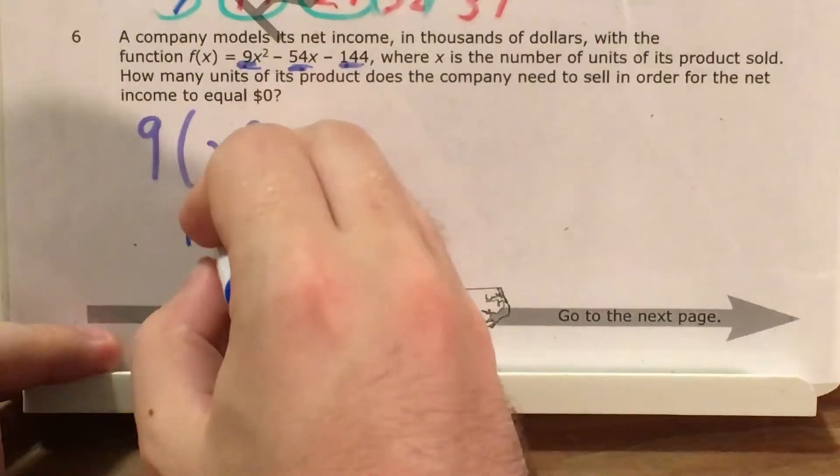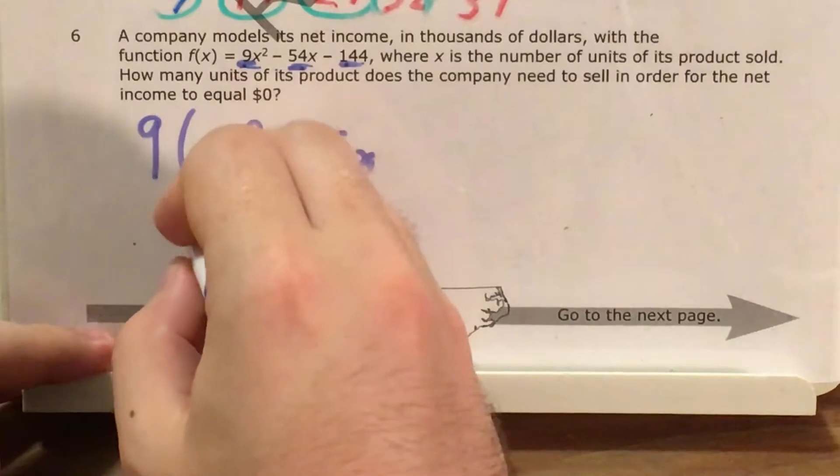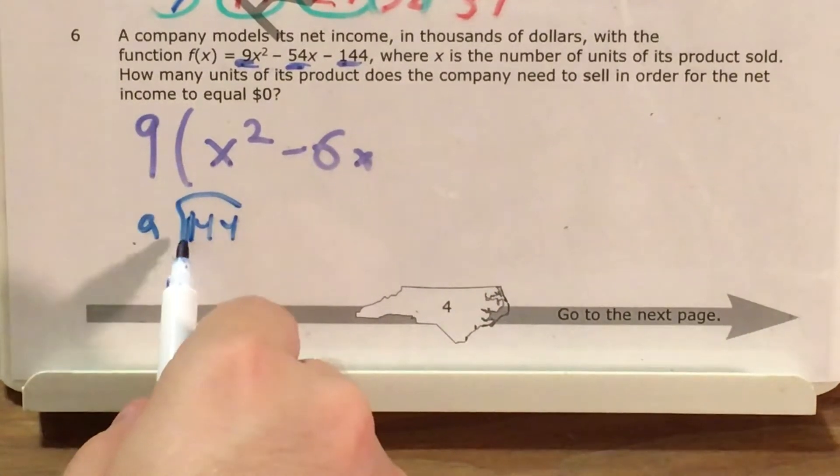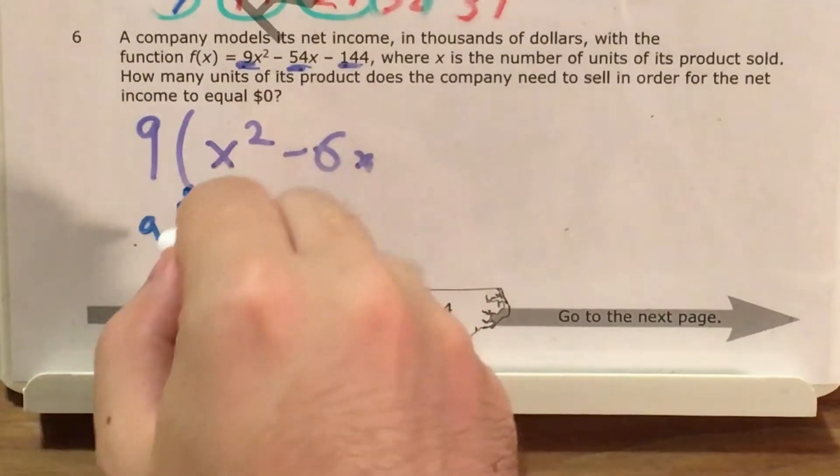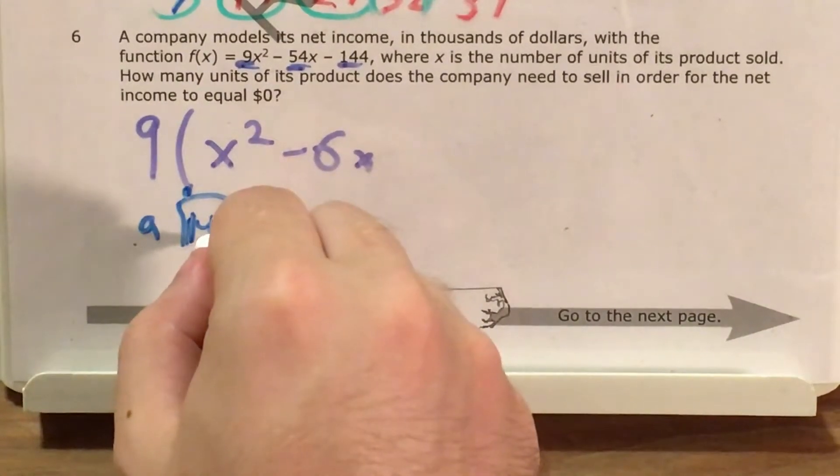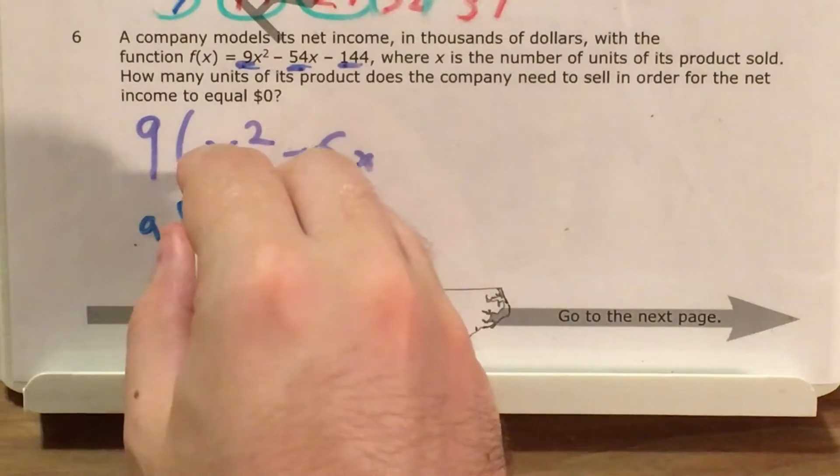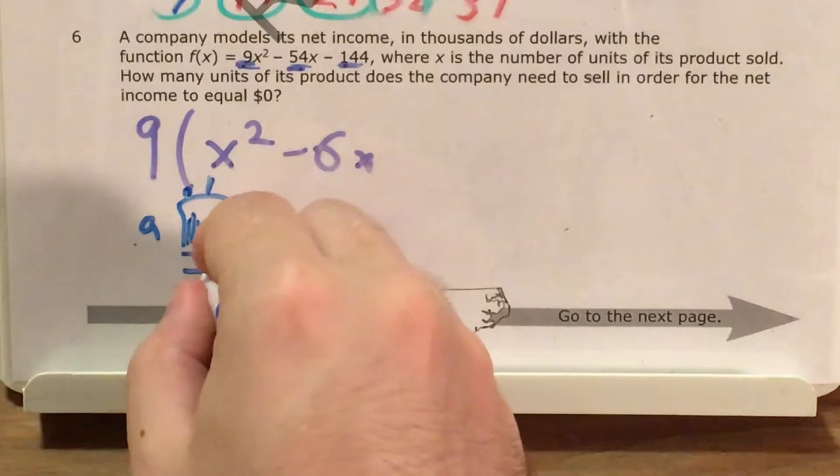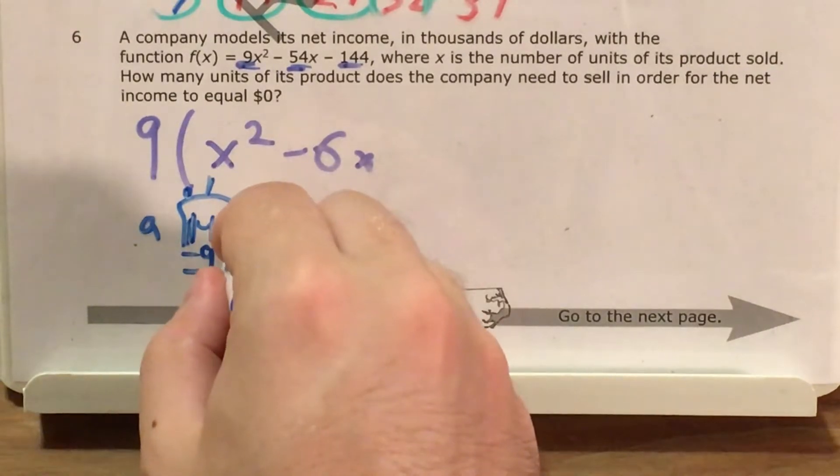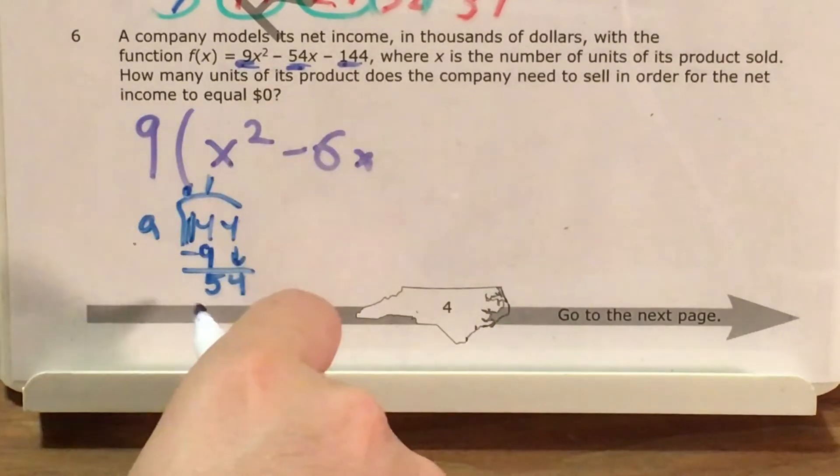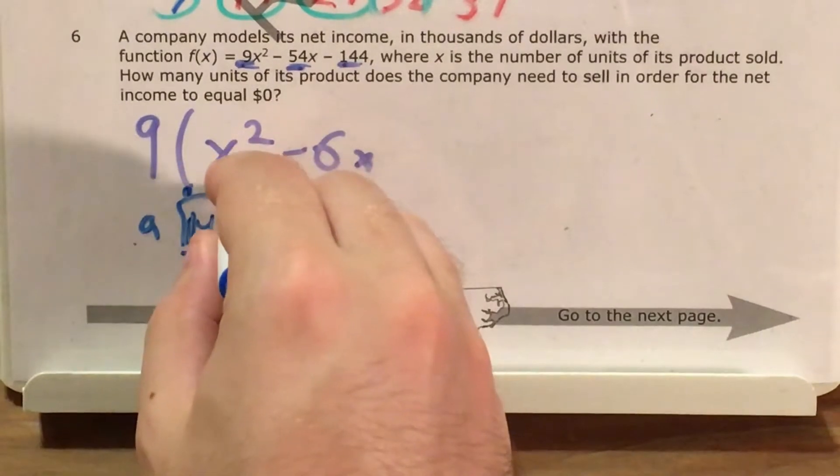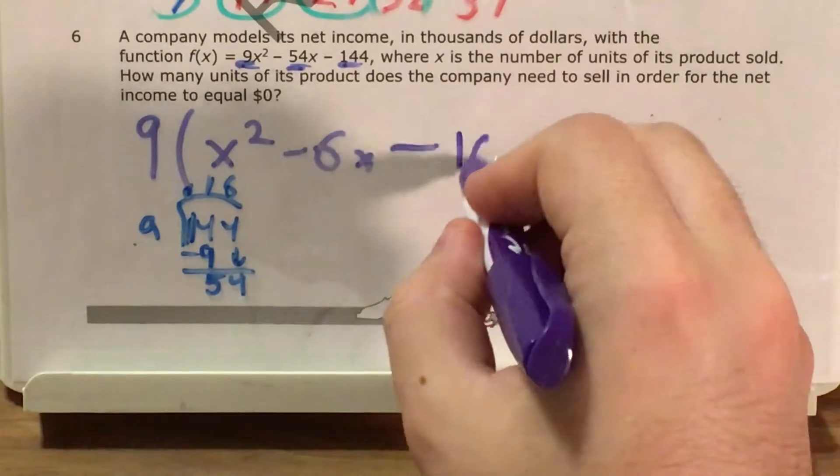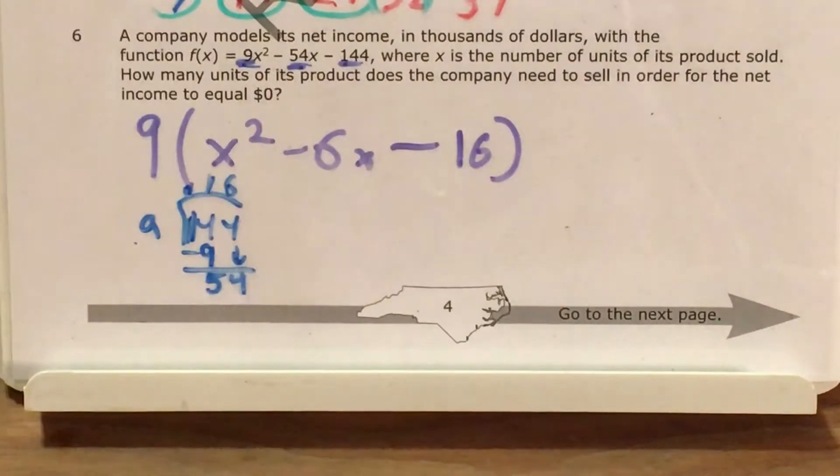I would see how many times 9 goes into 1 for my hundreds place, and it doesn't. I see how many times 9 goes into 14, and it goes into 14 just one time. So 14 minus 9 gets me 5 tens left. I bring down my 4, and I'm now left with 54 ones, which once again, 9 goes into that 6 times.